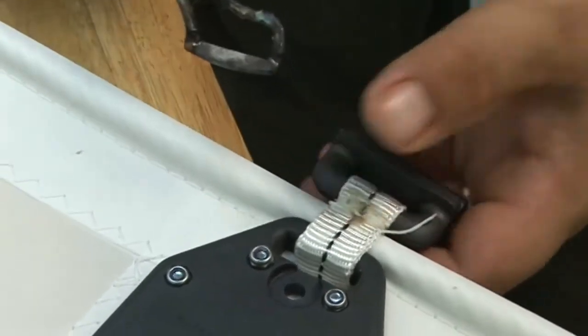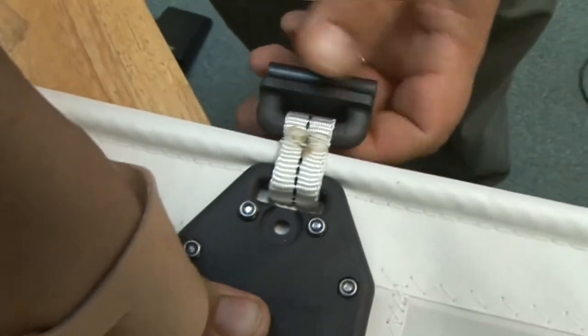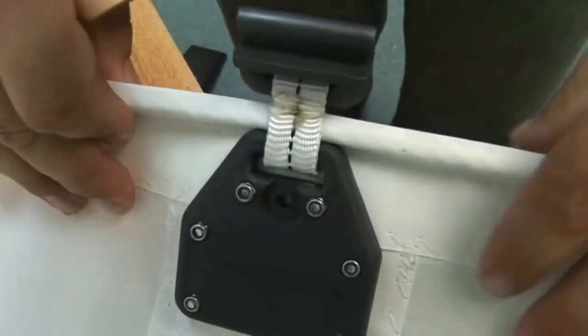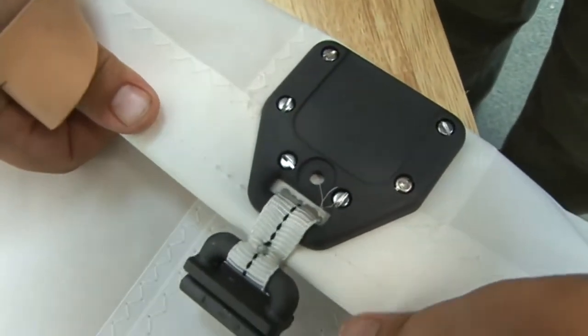Do that here for that other trailing leg. There we are. That's it. That's one of the installations and the installation that we usually recommend for a batten end protector on a full batten sail. Looks good.